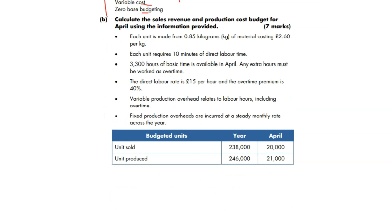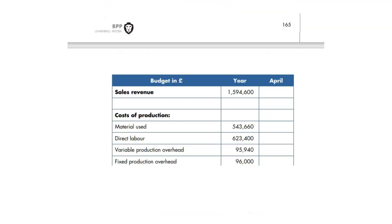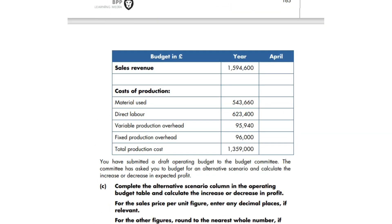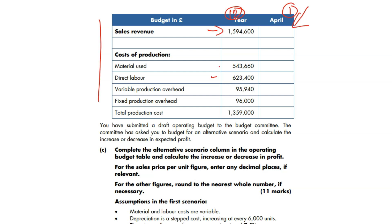Moving on to the next part of the question — for 7 marks, this is a calculation question. 'Calculate the sales value revenue and production cost to budget for April using the information provided.' Some information is given in a box: budgeted units sold and produced for the year and for the month. In the requirement, you have submitted a draft. Sales for the year are given for 12 months and you've got to do only one month. Material, labour, variable and fixed — all these are given, so I need to fill in all the information here.